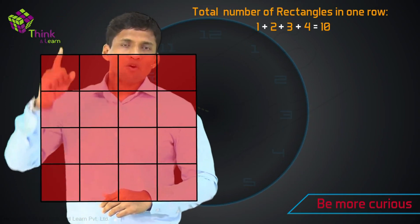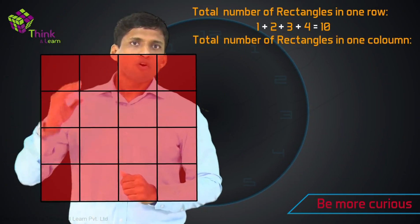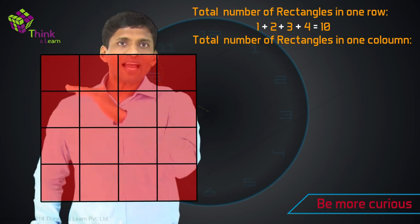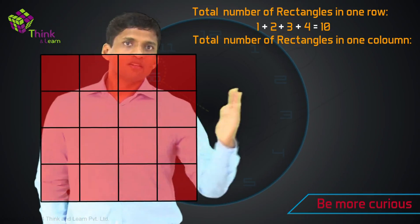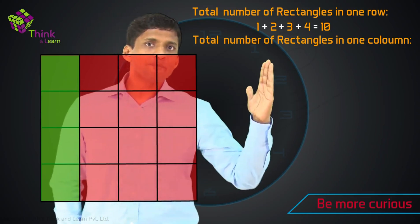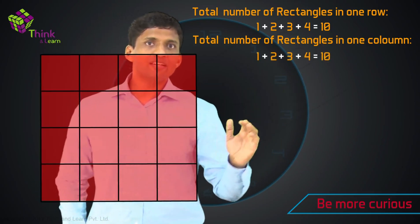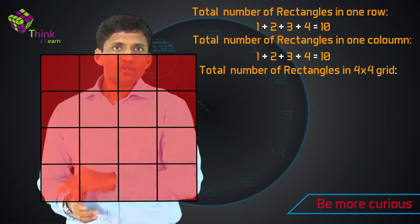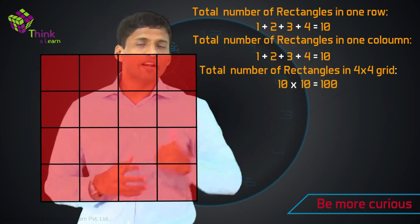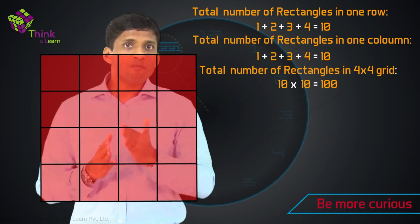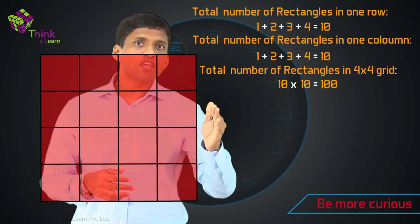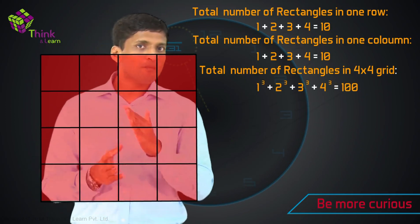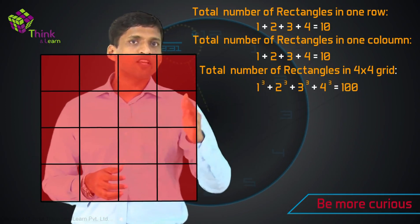Similarly in the first column: 1 by 1 gives 1, 2, 3, 4; 1 by 2 gives 1, 2, 3; 1 by 3 gives 1 and 2; and 1 by 4 gives just 1. So the total rectangles along this column is also 1 plus 2 plus 3 plus 4, which is 10. In the complete 4 by 4 grid, the total number of rectangles is 10 into 10, which is 100, or 10 squared. This can also be written as 1 cube plus 2 cube plus 3 cube plus 4 cube — the sum of the first 4 perfect cubes.